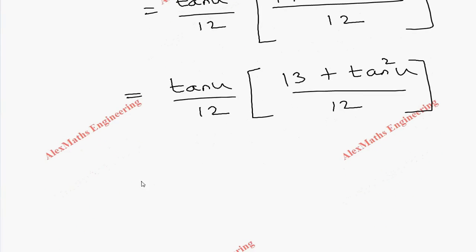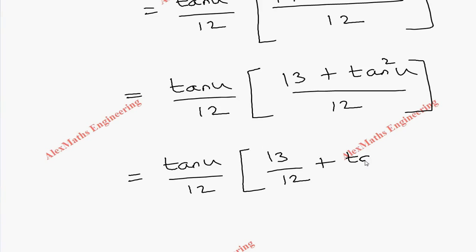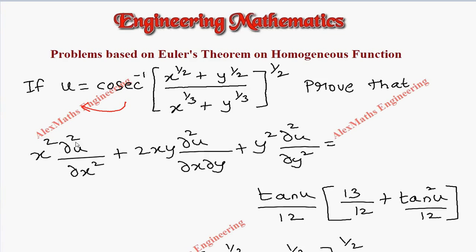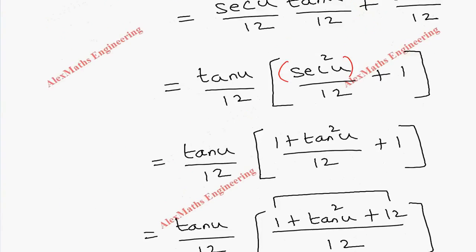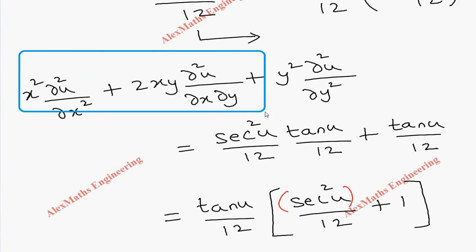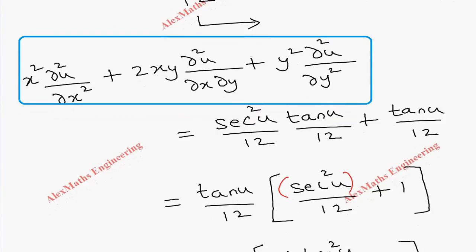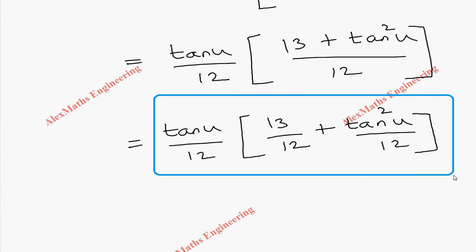Dividing individually, we get (tan u / 12) · (13/12 + tan²u / 12). So the final result is: x² · ∂²u/∂x² + 2xy · ∂²u/∂x∂y + y² · ∂²u/∂y² = (tan u / 12) · (13/12 + tan²u / 12). This matches the expression given in the question. Hence proved.